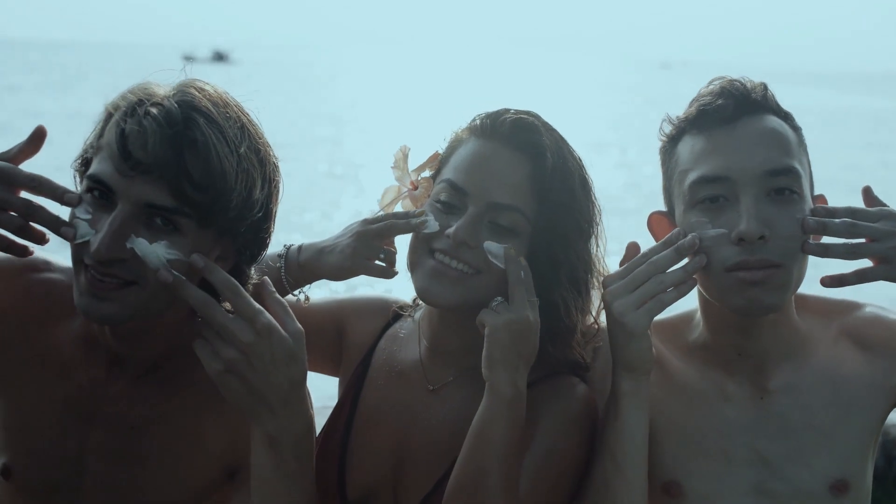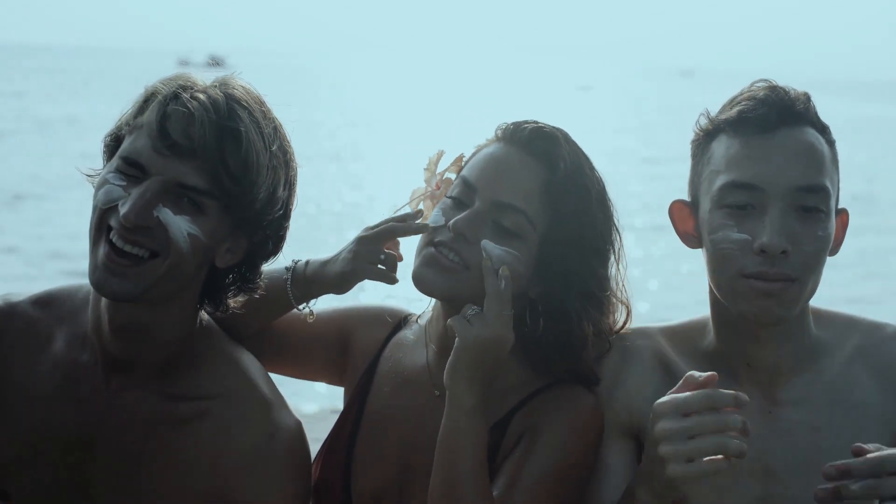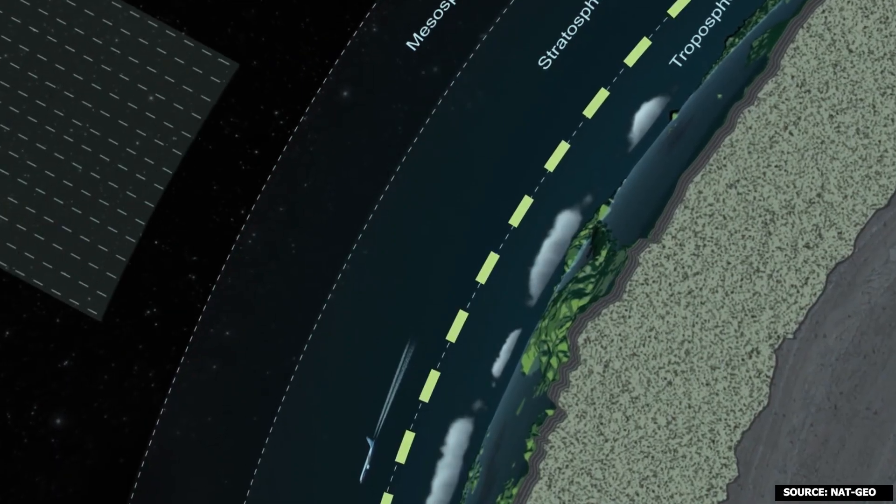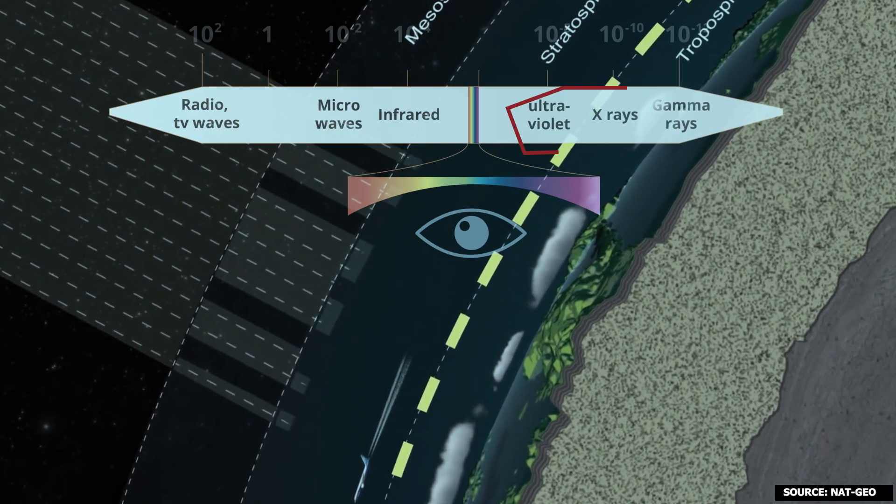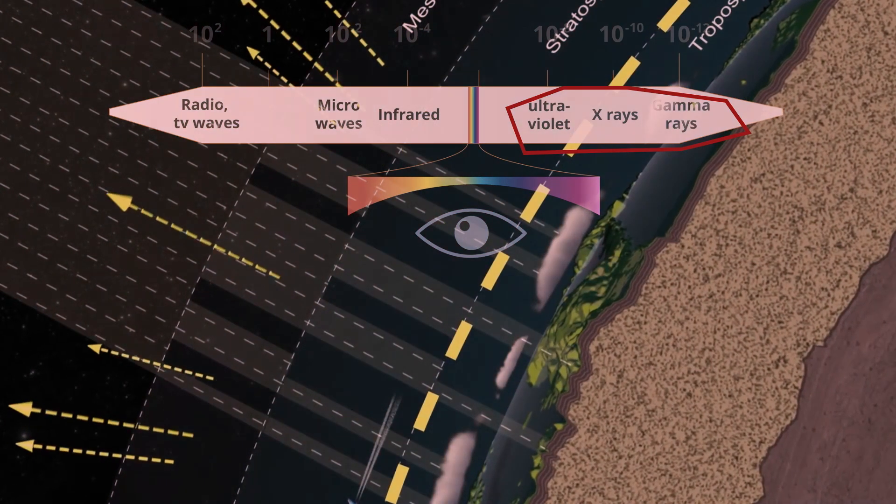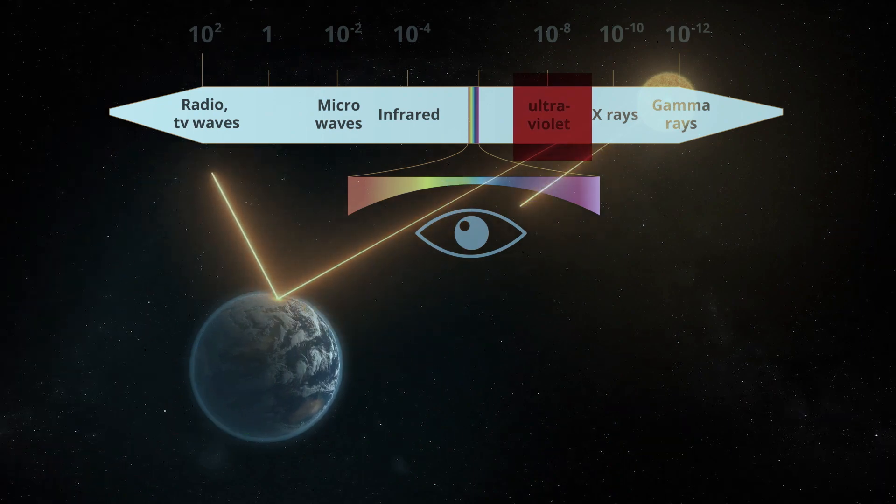Now, one might wonder, if ozone is our shield, why do we still need sunscreens? Here's where it gets interesting. The sun is a prodigious emitter of a wide spectrum of rays, ranging from visible light to hazardous gamma or x-rays. The sun showers the earth with an array of radiation. Particularly concerning are the ionizing UV rays, which have the ability to penetrate and even modify our DNA.